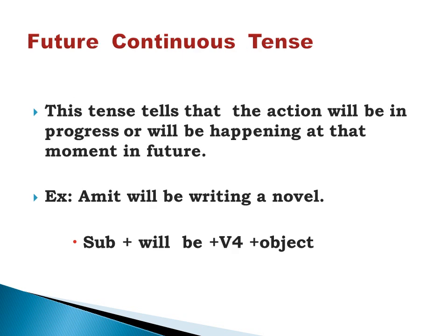Future continuous tense tells us that the action will be in progress or will be happening at that moment in the future. Example: Amit will be writing a novel. Formula: subject + will be + ing form of the verb (V4) + object.